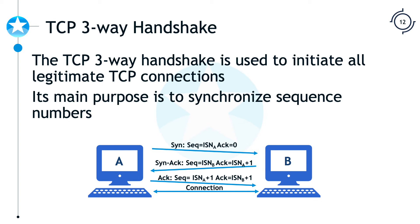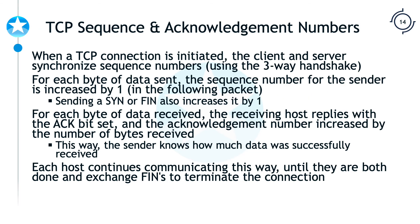After the three-way handshake, we send our communication data back and forth. Our acknowledgement number is going to be one more than the sequence number plus the number of bytes sent. When one side is done, we're going to exchange a FIN — short for FINISH — to terminate the connection. That is one of the other TCP flags.